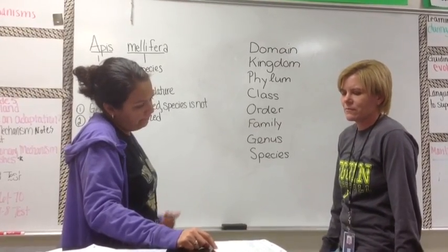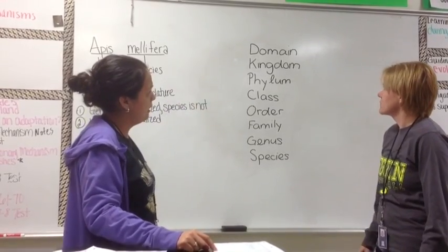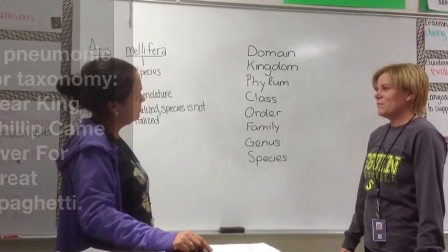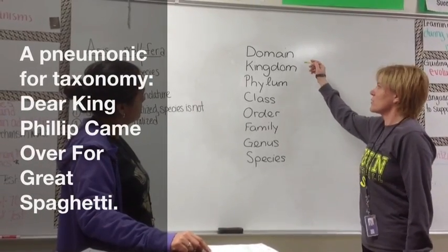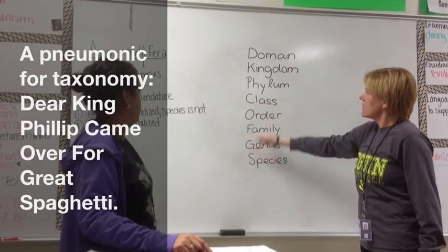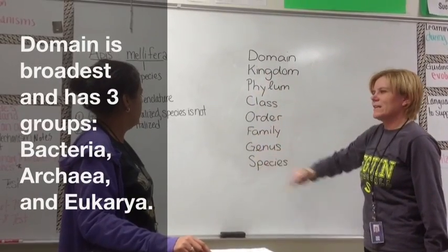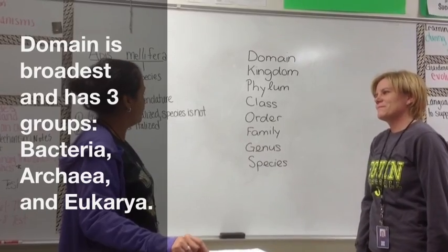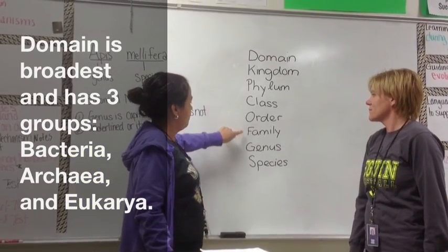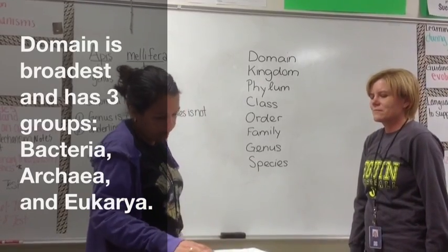How do we remember the order of this eight-level classification system? We look at the first letters and say: 'Dear King Philip Came Over For Great Spaghetti.' That's a great mnemonic — Domain, Kingdom, Phylum, Class, Order, Family, Genus, Species.